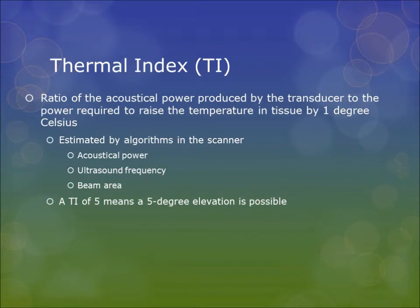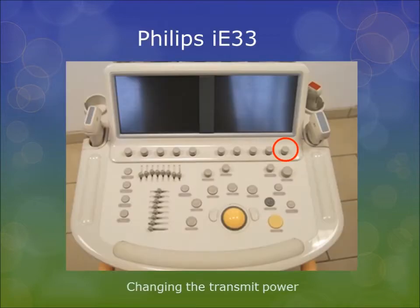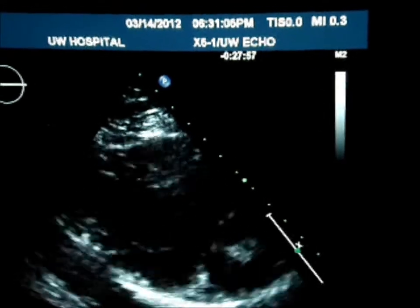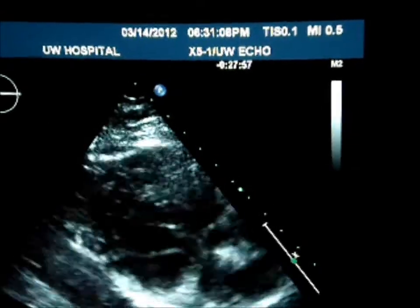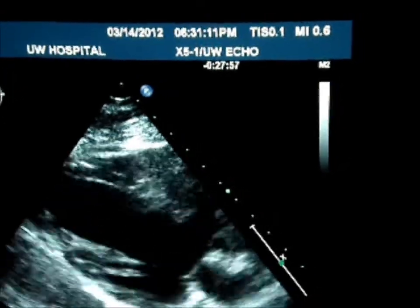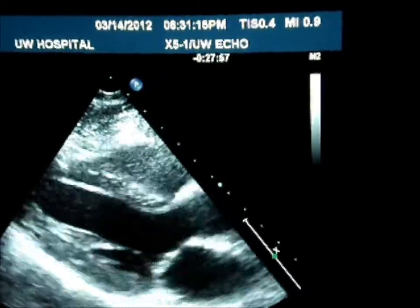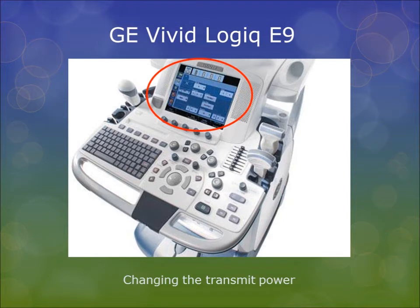Thermal index is defined as the ratio of the acoustical power produced by the transducer to the power required to raise the temperature in tissue by 1 degree Celsius. TI is estimated by algorithms in the scanner, such as acoustical power, ultrasound frequency, and beam area. A TI of 5 means a 5 degree elevation is possible. Please pay attention to the soft tissue thermal index along with the mechanical index in the upper right-hand corner. Throughout all three examples, we scanned up to 100% output. Note that the overall gain in the images either increases or decreases according to the power setting of the ultrasound machine.